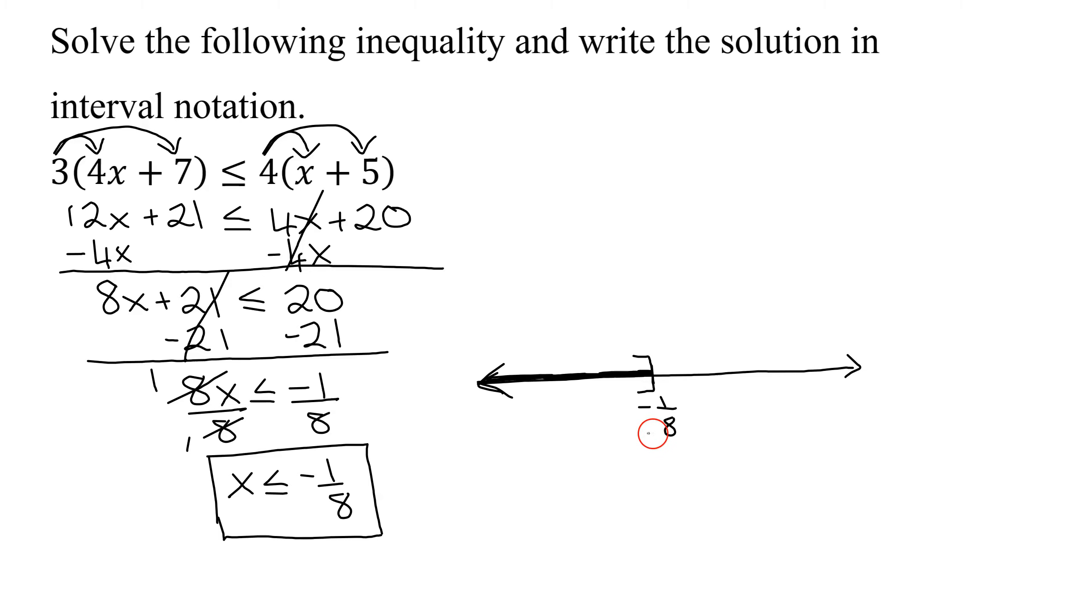Interval notation is just a shorthand version of the graph. Where does my graph start? It starts at negative infinity. And we always use parentheses on positive and negative infinity. And then it goes all the way up to negative 1/8. But as it can include the end point, we put a square bracket on the negative 1/8. So, there is my interval notation.